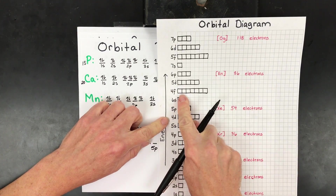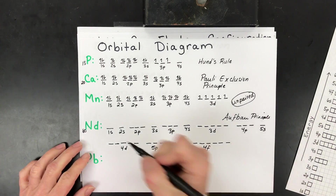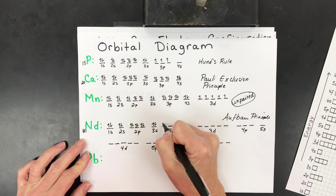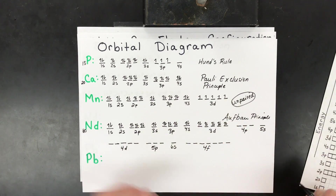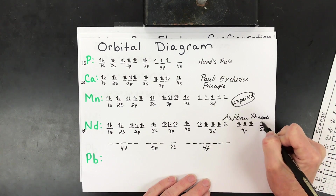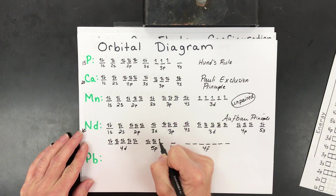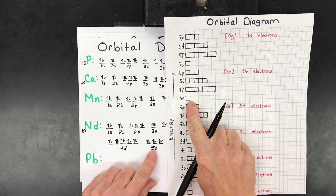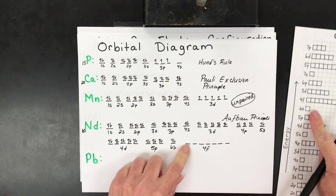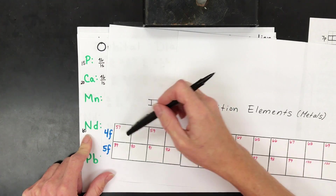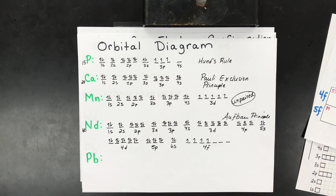After 6s comes 4f with seven possible orientations. We have 60 electrons to place. Counting through: 1–10 fill 1s/2s/2p, 11–20 fill 3s/3p (calcium's level), 21–30 fill 4s/3d, 31–36 fill 4p, 37–38 fill 5s — that's xenon at 54 electrons plus 2 more for 6s = 56, and neodymium is 60, so we place 4 electrons into the 4f orbitals.